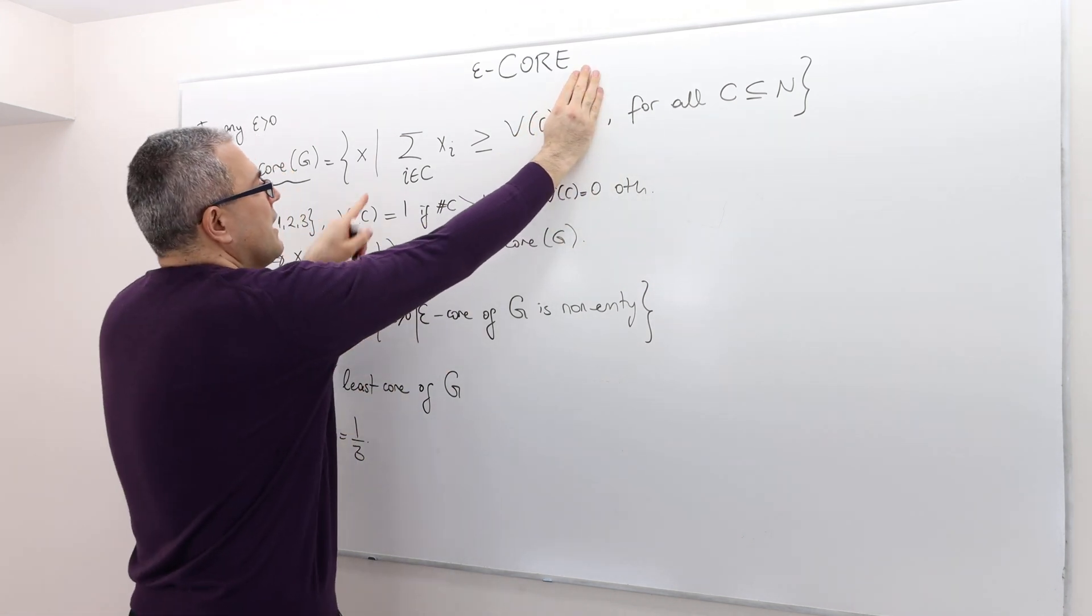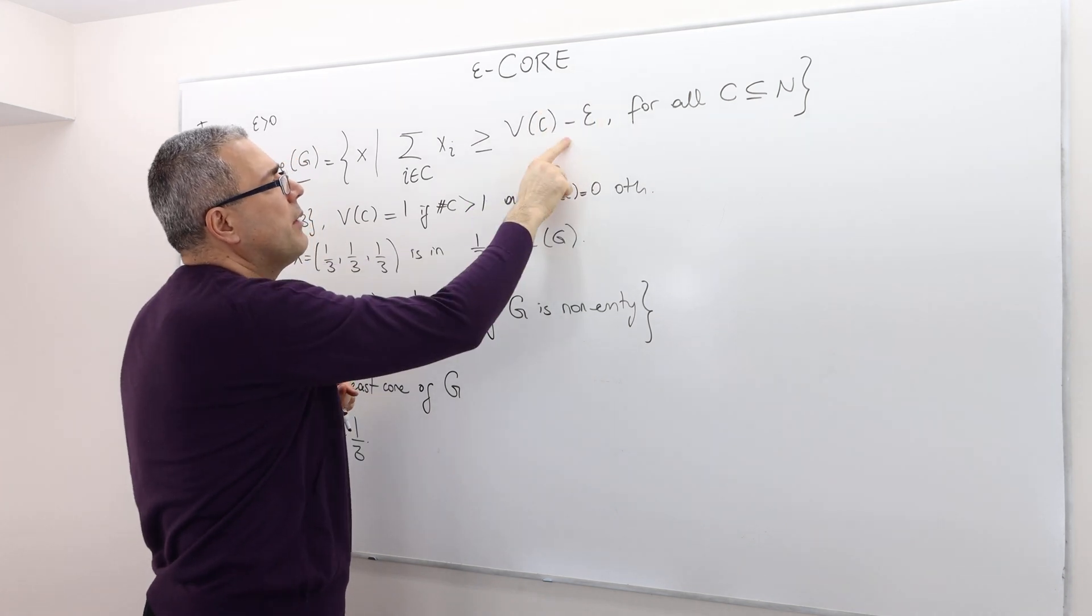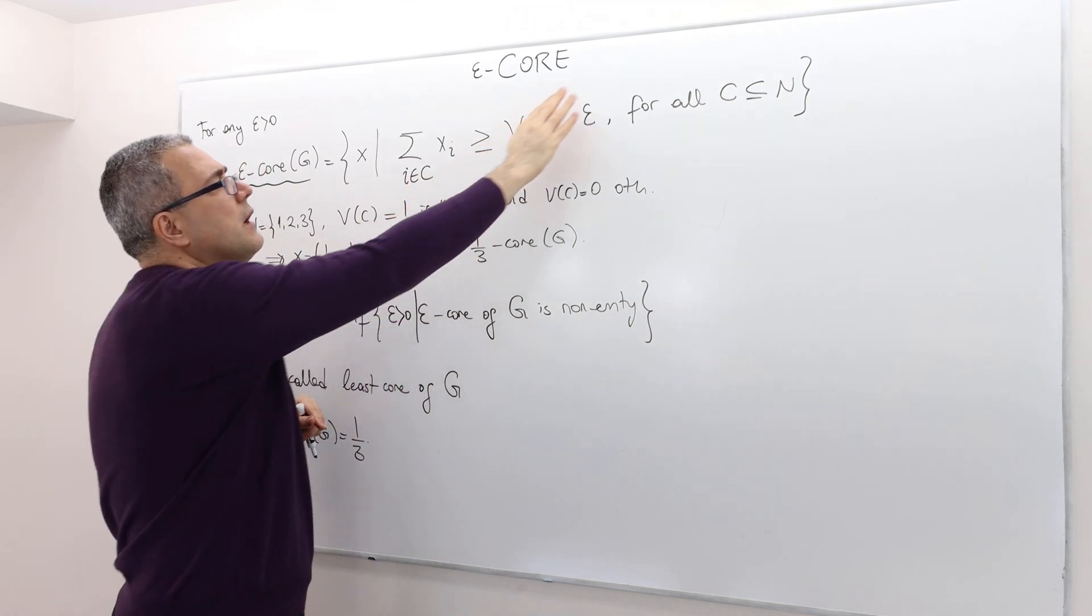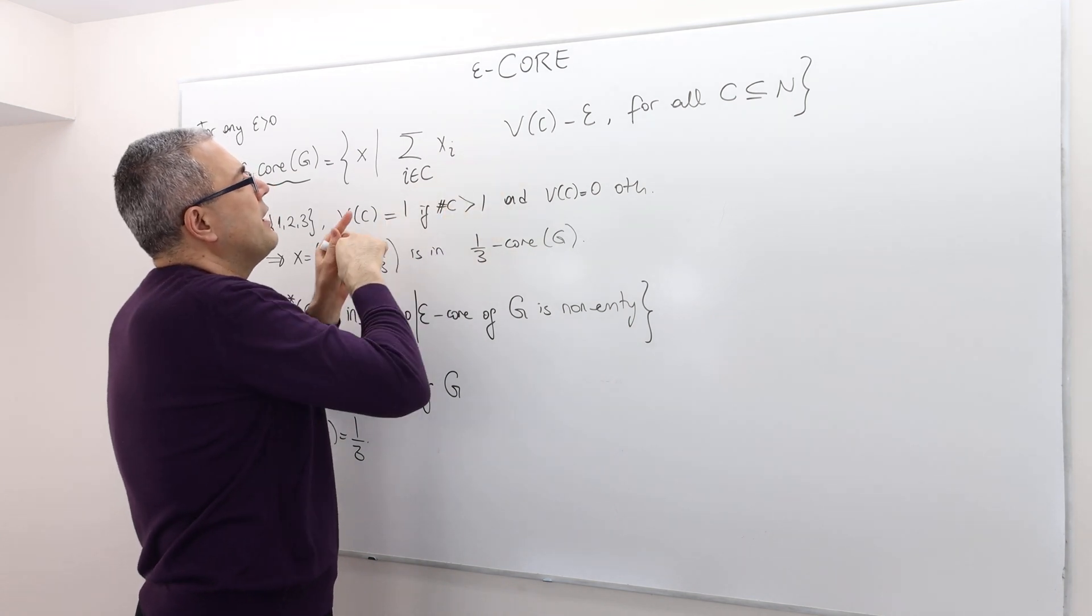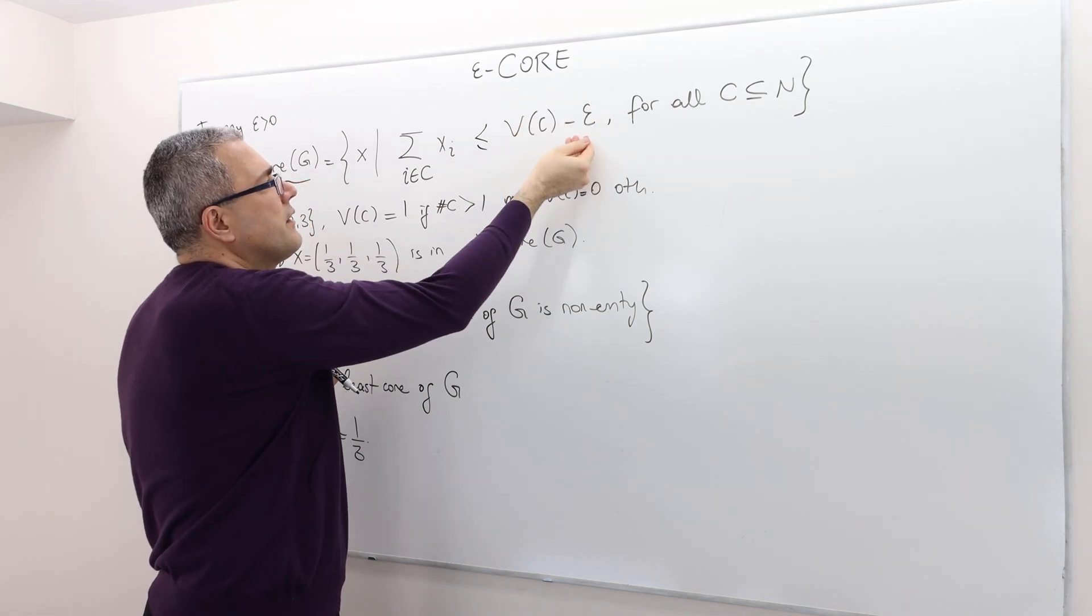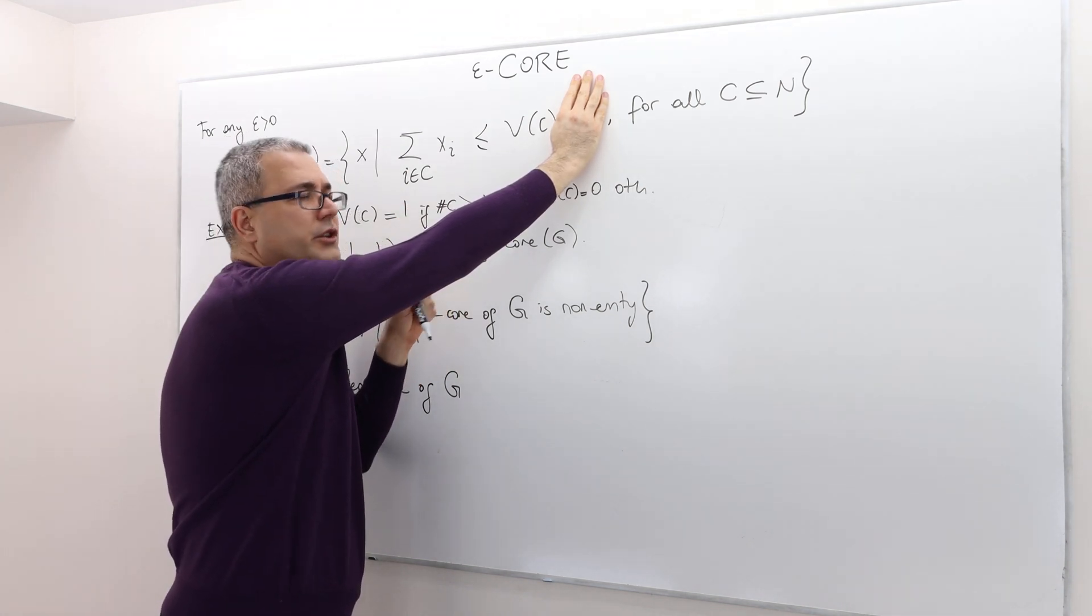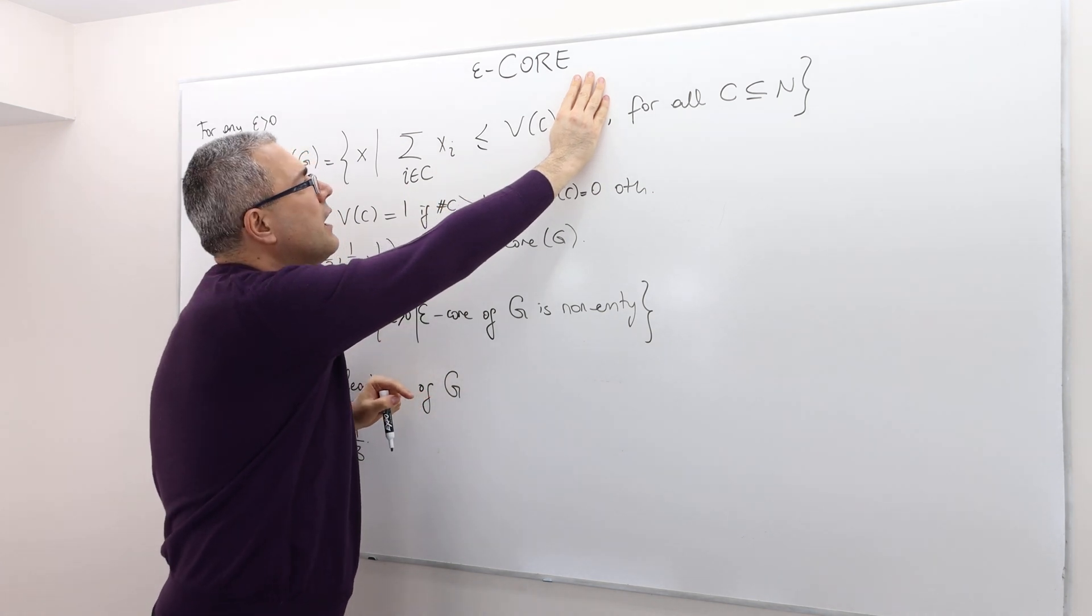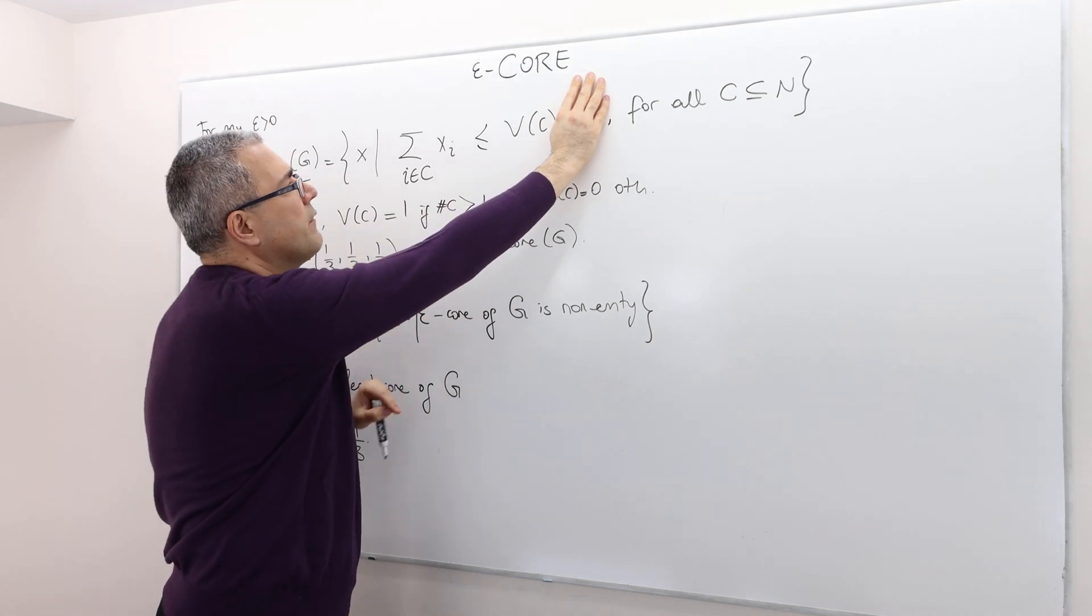Remember, the stability requires that this inequality should hold, but we relax this inequality by subtracting Epsilon here. Some coalitions may actually prefer when we have summation Xi is less than V(C). But when I subtract this, so that basically means this coalition C actually wants to break up this grand coalition and form their own coalition because that coalition is going to get a very high payoff relative to the X payoff vector.